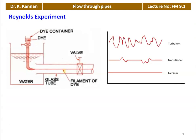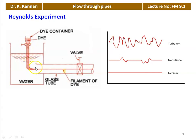The Reynolds experiment is conducted with this apparatus. This is the schematic of the Reynolds experiment apparatus. We have a tank with water and a glass tube. At the end of the glass tube, we have a valve. At the center of the pipeline, we have the nozzle or the tip of the dye injector, and a valve to regulate the flow of the dye, which is injected through the small nozzle.